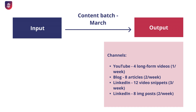Let's make this more tangible. I'm going to show you an example of what your March content could look like. Let's say that you only focus on three channels: YouTube, blog, and LinkedIn. For YouTube, you want to create four long-form videos, one per week. Then for your blog, you want to create eight articles, two per week.